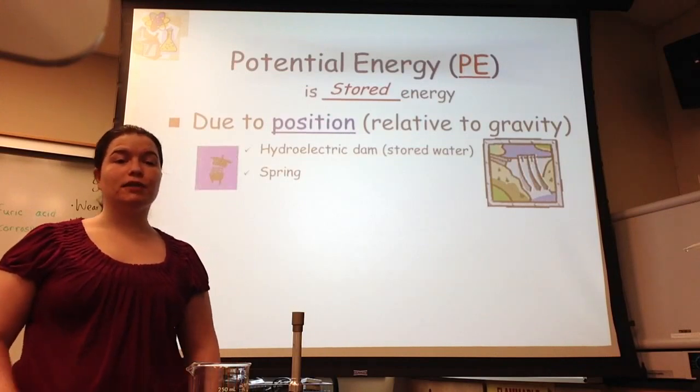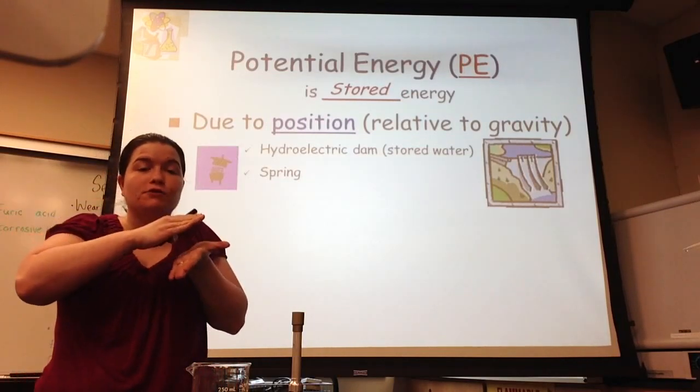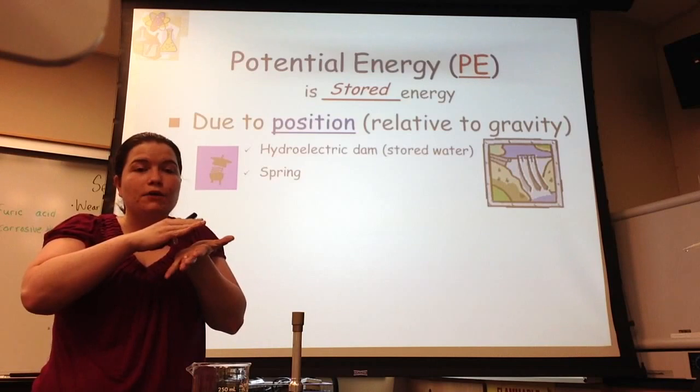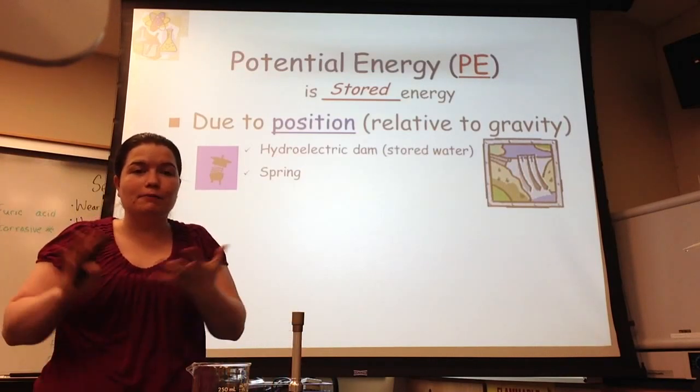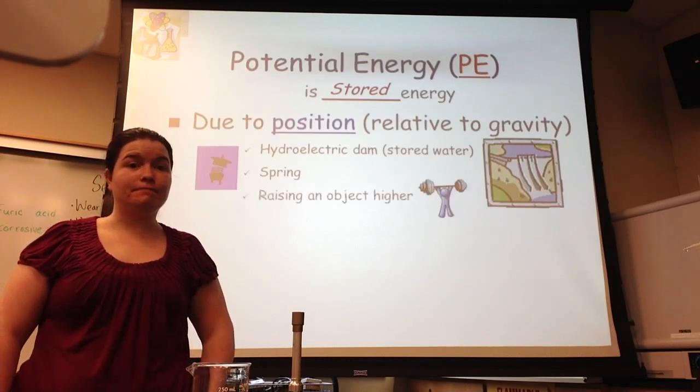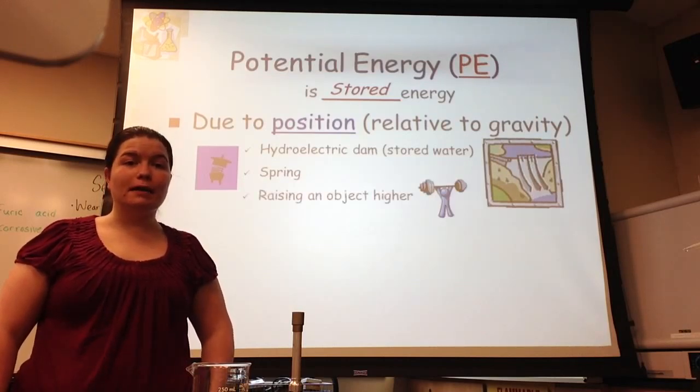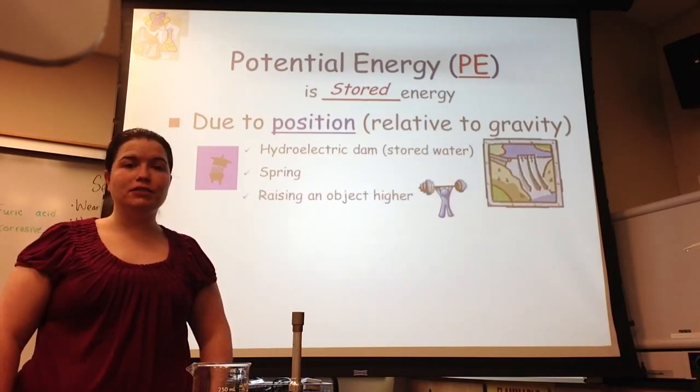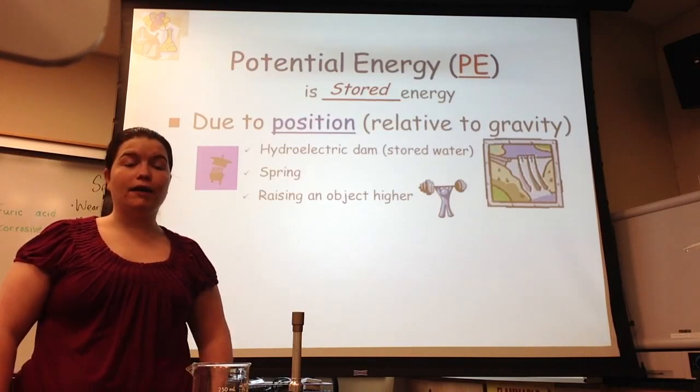A spring also has potential energy. As you compress the spring, you're storing energy in the coils, and when you release the spring and let it bounce around, you're releasing the energy in the form of kinetic energy. Another example of potential energy due to position is raising an object to a higher altitude.